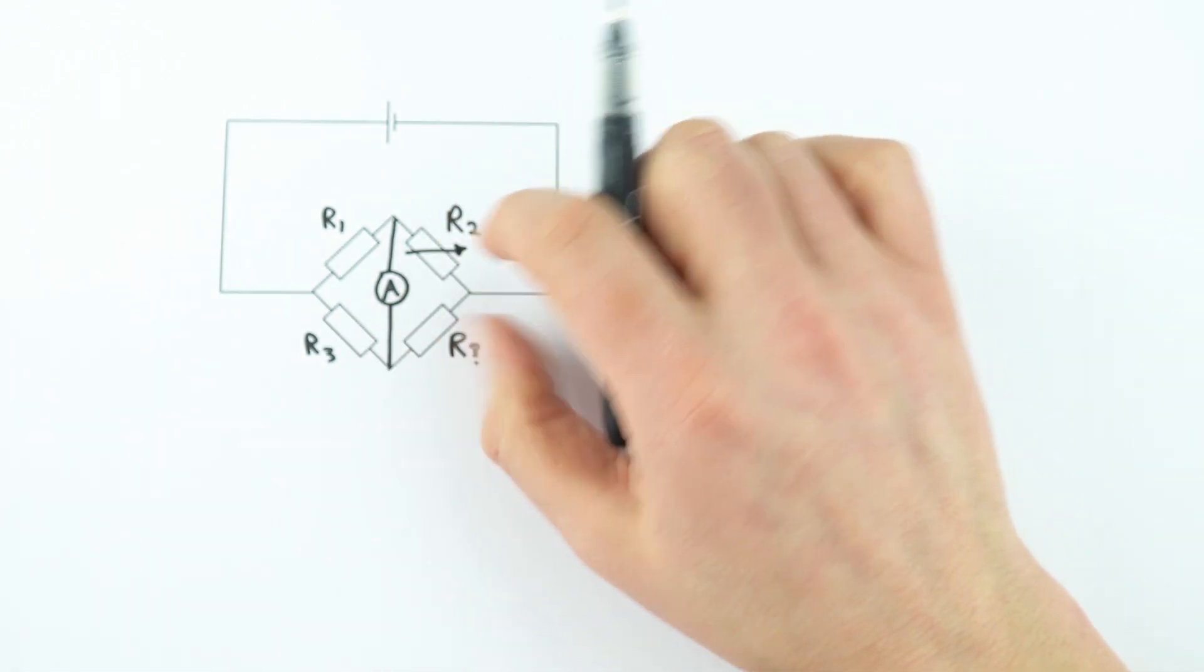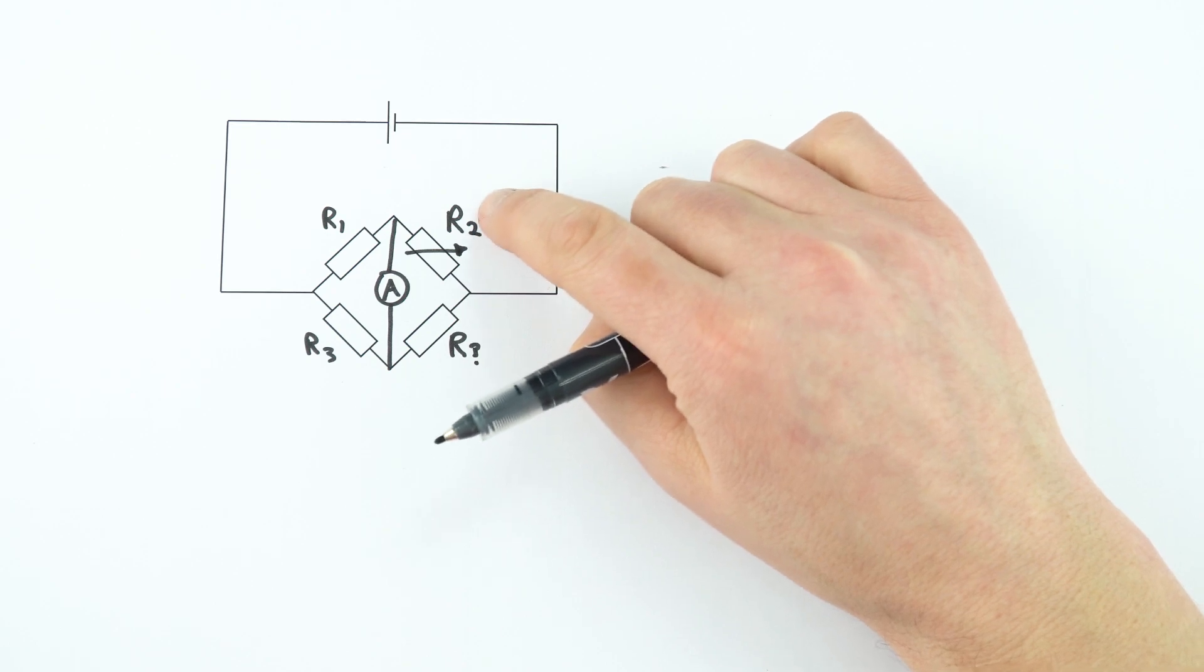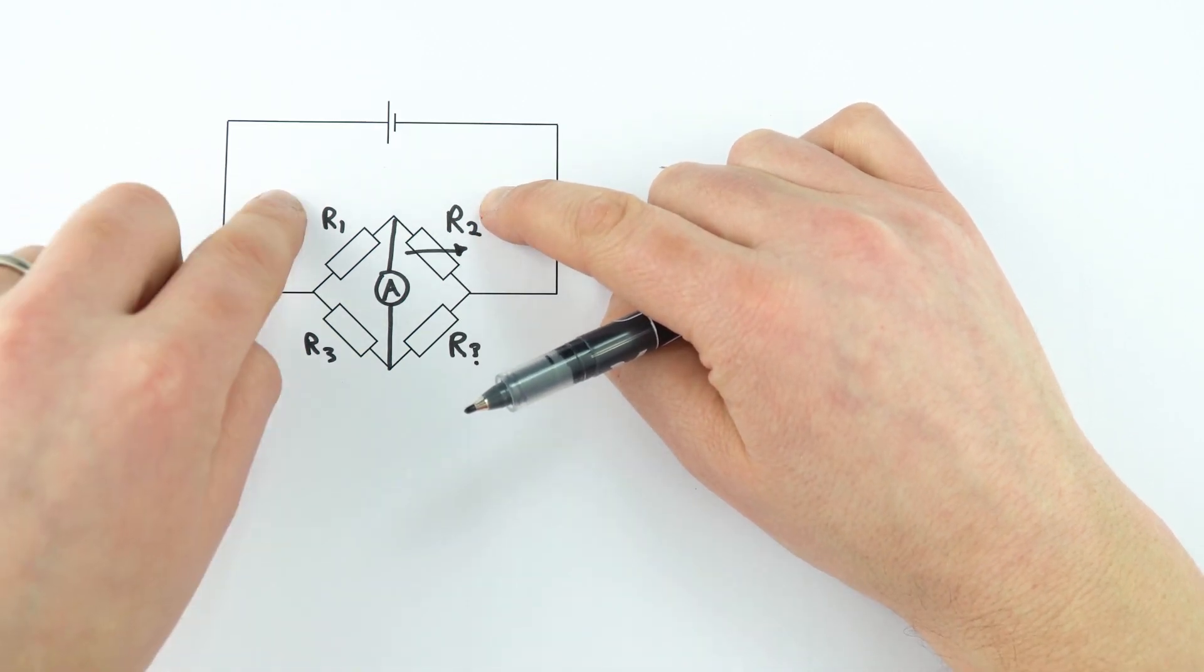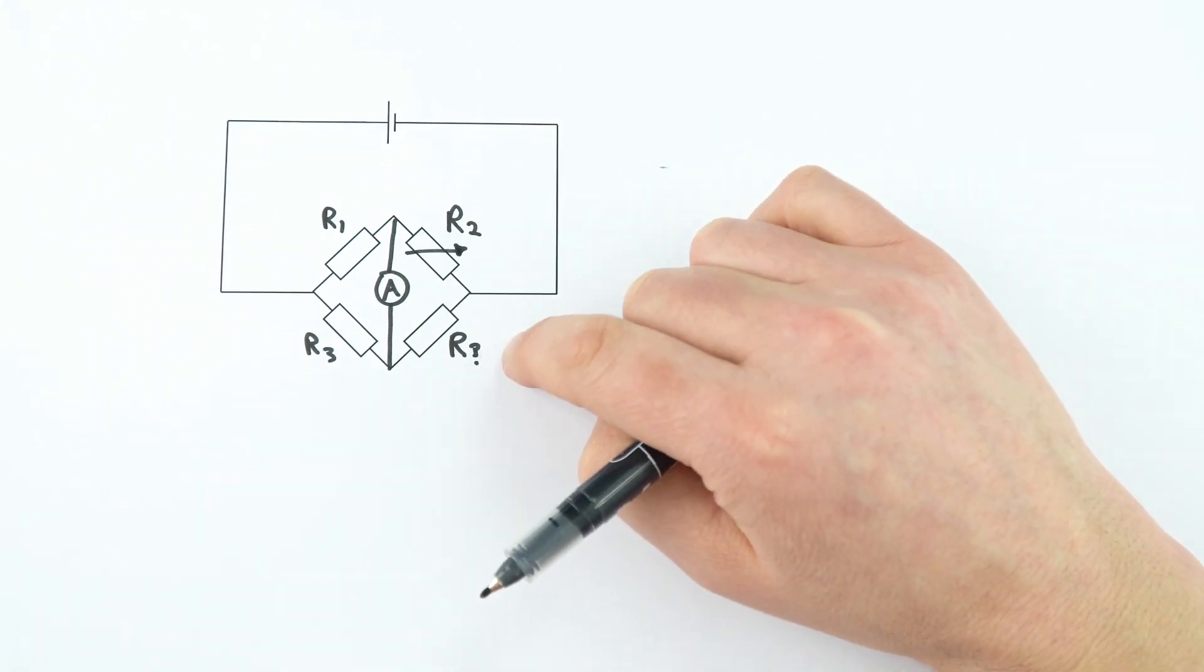Effectively what we can do is we can balance the circuit by using the variable resistor over here. If we know the value of R1 and R3, if we balance it appropriately, we can then find the value of this unknown resistance.